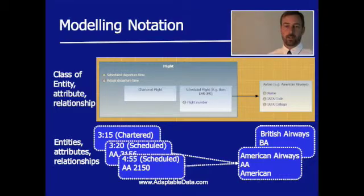So let's take a look at the Collido modeling notation and introduce how that works in practice. I've produced an example here with classes of entity, classes of attribute and classes of relationship at the top of this slide.